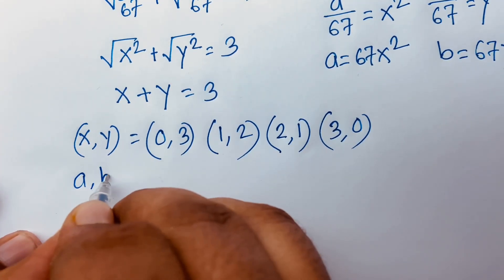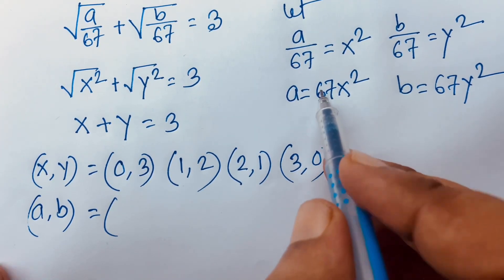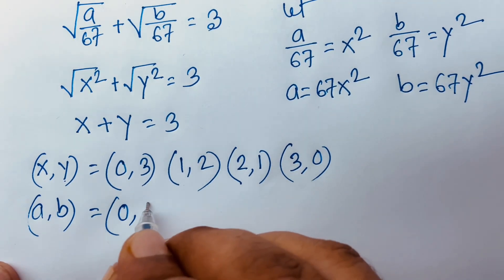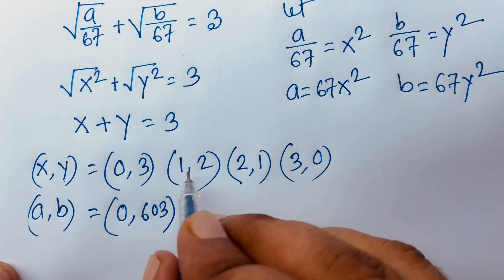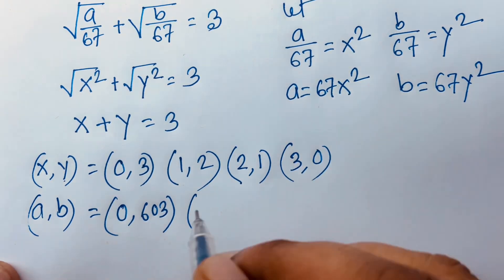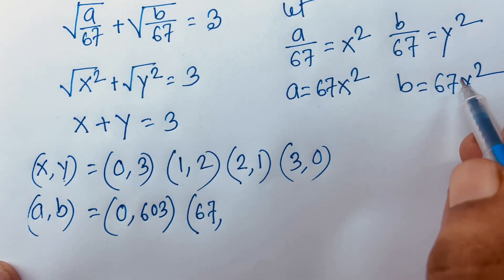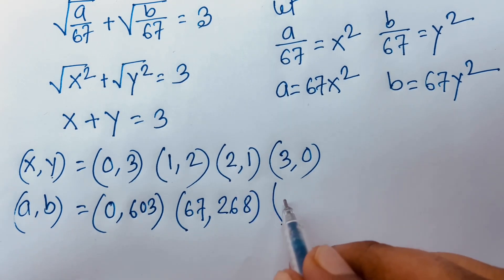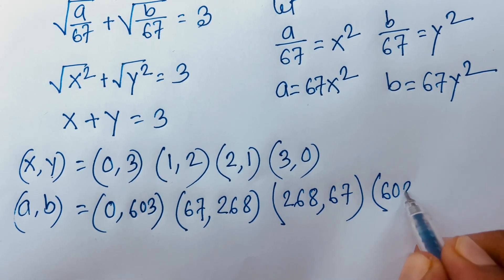We need non-trivial values of a and b. When x equals 0, then a equals 0; and when y equals 3, then b equals 67 times 9 equals 603. When x equals 1, then a equals 67; and when y equals 2, then b equals 67 times 4 equals 268. The case (2,1) gives the same pair (a=268, b=67) swapped, and (3,0) gives (603, 0).